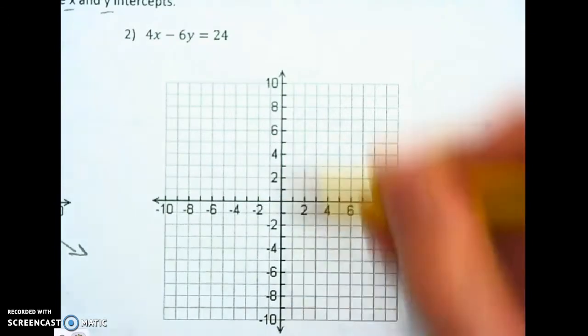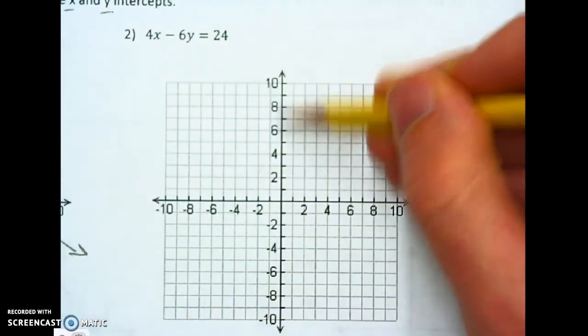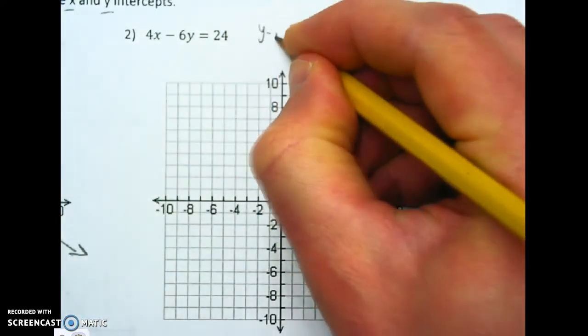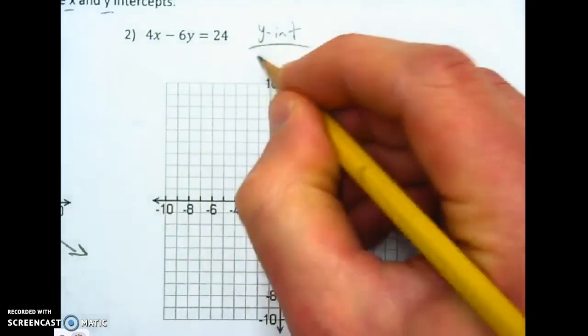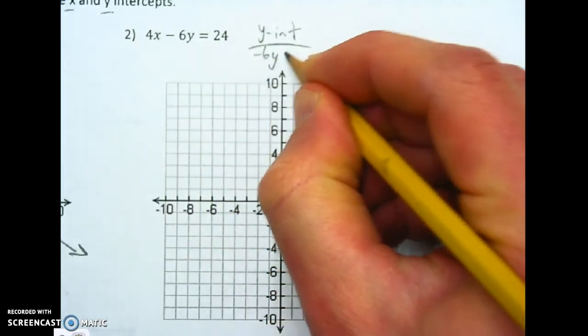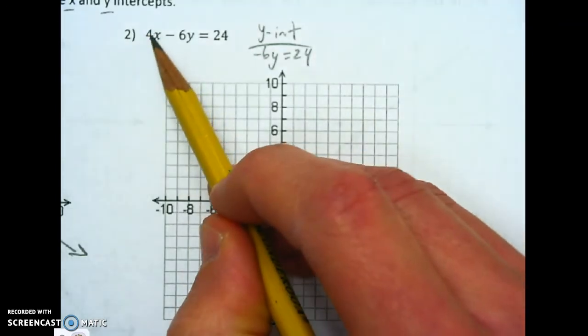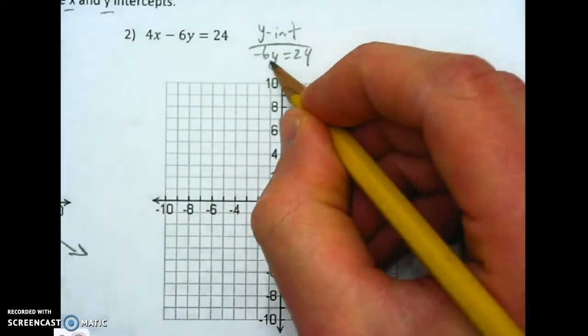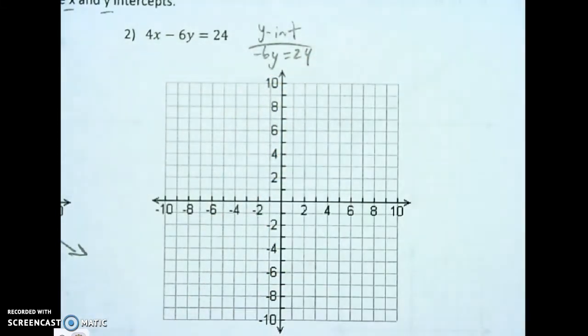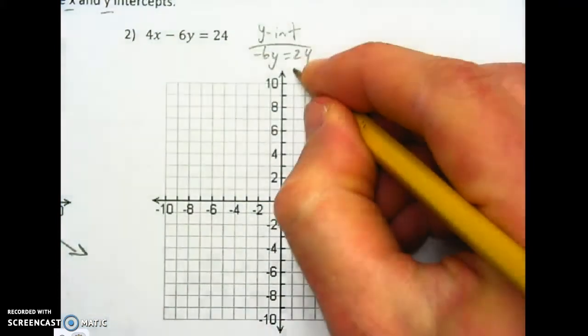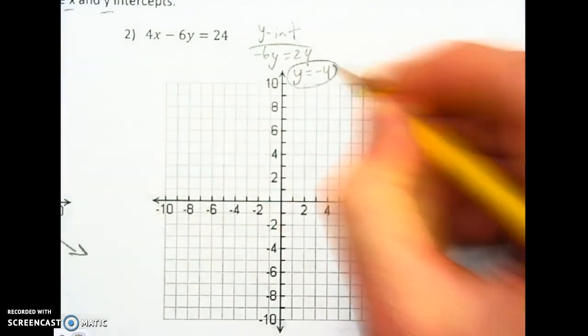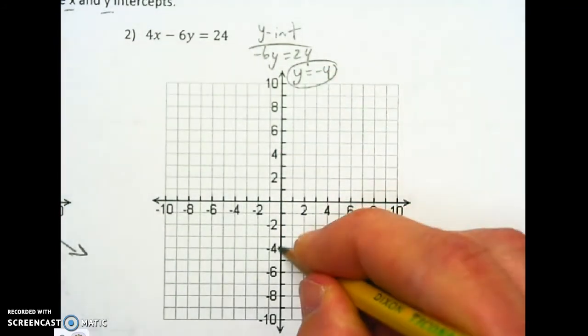So the y intercept right here is when x equals 0. Anywhere on this y axis, x equals 0. So if I plug in a 0 for x, I will get my y intercept. So that means I will have negative 6y equals 24. I don't have x's because they're 0. 0 times 4 is 0. So now I need to divide by negative 6, and I have my answer. So y is going to equal negative 4. So now I can plot negative 4 on my y axis.